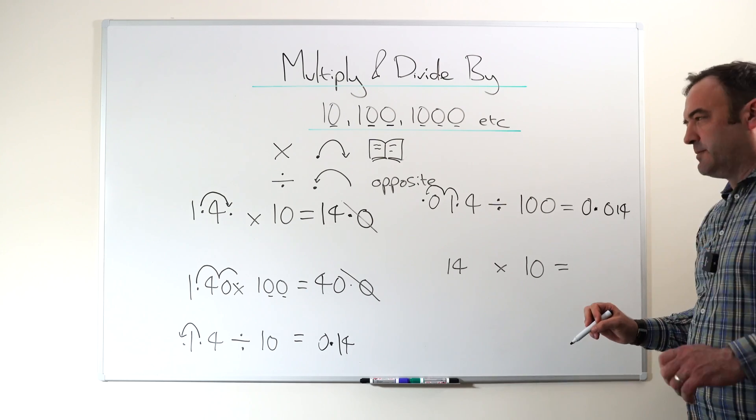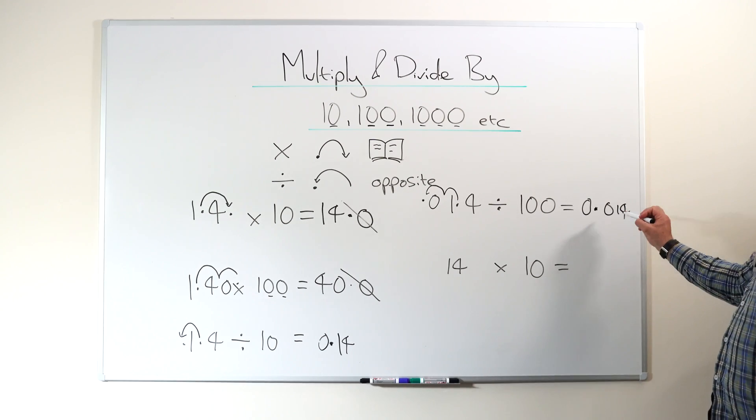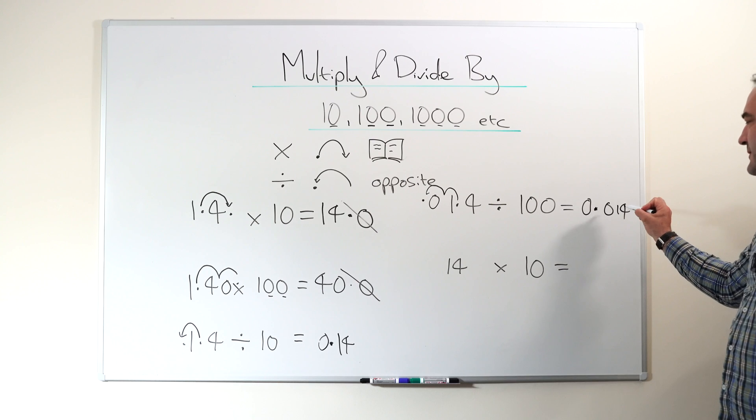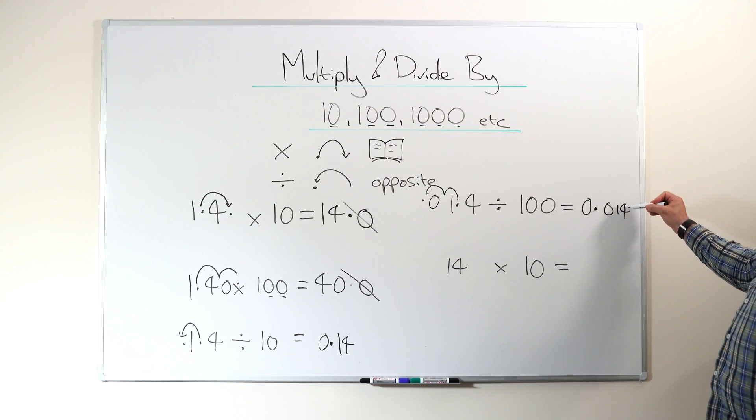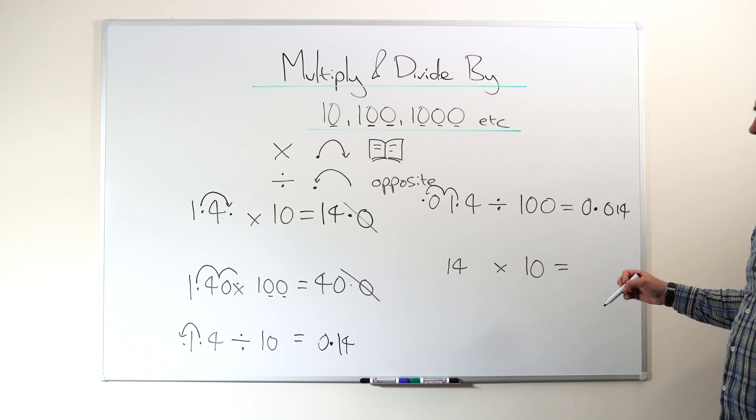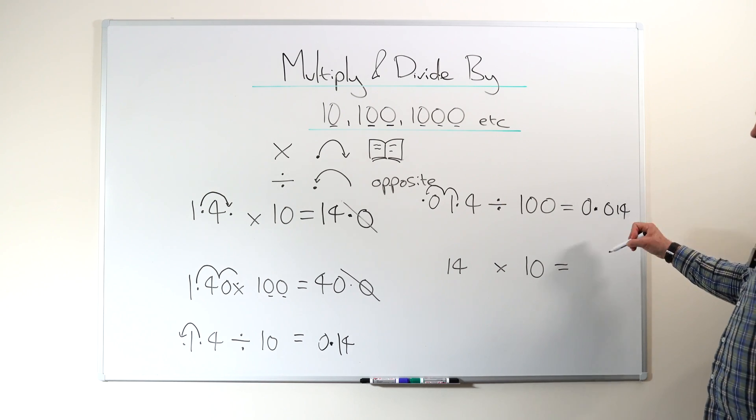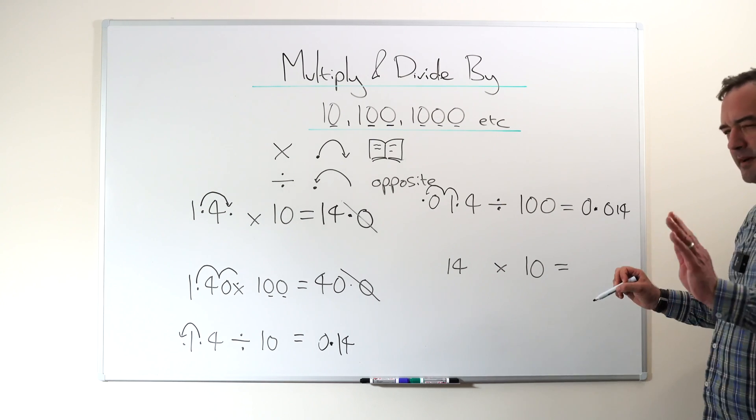Sometimes I pick kids up on this as well. They'll say 'oh it's 0.014' and I'll say 'no, you can't say 14, it's 1.4 because 14 is talking about units and tens.' So it's 0.14, not 0.14. We must pick them up on that.